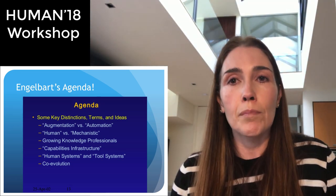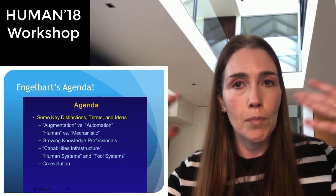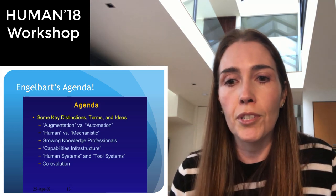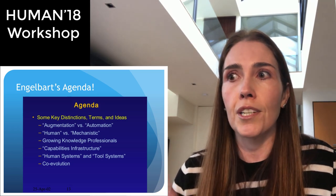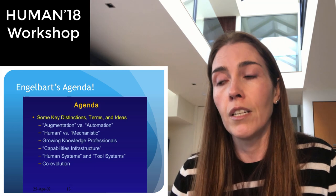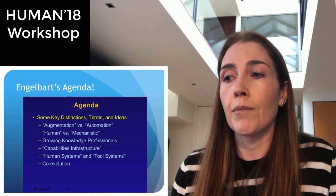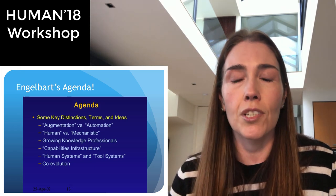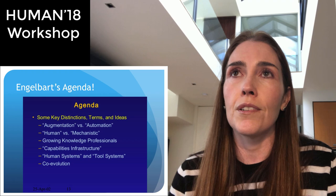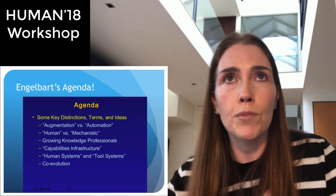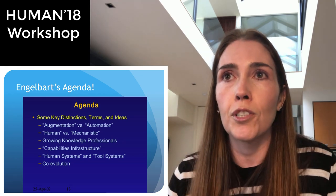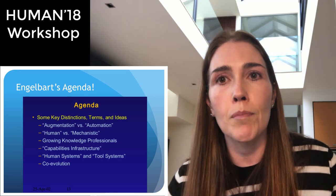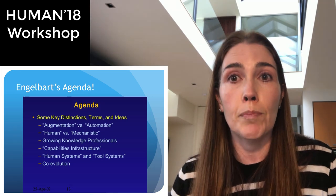I'm also going to look at what Doug meant by the capability infrastructure and how we can contribute to that using the tool system. Then we're going to look at what he meant by coevolution — how we can use the tool system to improve the human system and consequently improve our capability as a species. Doug really thought at this kind of species level.